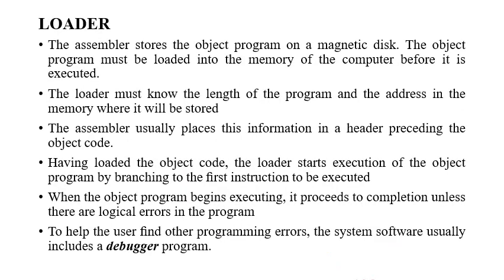Once the program is written, it has to be converted into object code. This object code, generated after assembling, has to be transferred to the memory of the computer system. In order to transfer the object code to memory, we need an additional program called the loader, which loads the program using particular input operations and transfers the machine code from the disk into a specified memory space of the computer system. The loader must also know the length of the program and the address in memory where it has to be stored, as specified by the ORIGIN directive. The assembler usually places this information in a header preceding the object code.